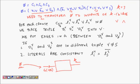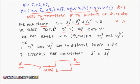Here is the construction. For each clause Cr with literals l1r ∨ l2r ∨ l3r, we place a triple of vertices v1r, v2r, v3r in the graph — one vertex per literal in the clause. So for each clause we get three vertices, giving us k triples (one per clause) and a total of 3k vertices.